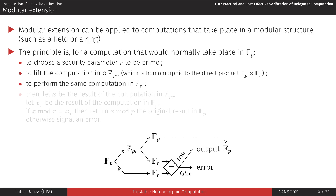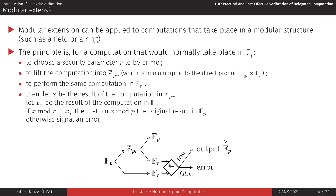In parallel with this big computation in Zpr, perform the same computation in Fr. Then compare the result of this small computation with that of the big one, reduced modulo R. If they match, return the originally expected result with high confidence that the computation hasn't been tampered with. Otherwise, signal an error.